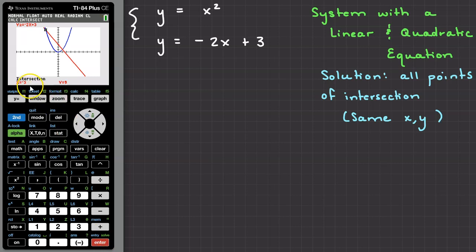The calculator calculates the point of intersection, which is the solution to this system, at x equals negative 3, y equals 9.